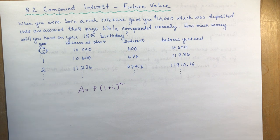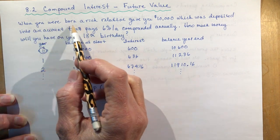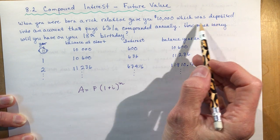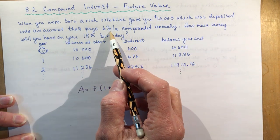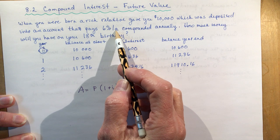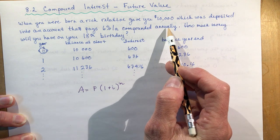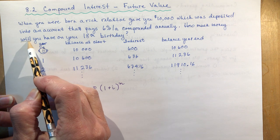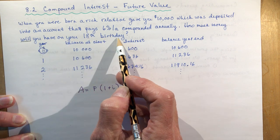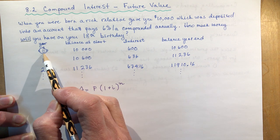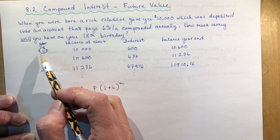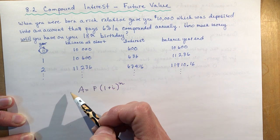The first one we're going to work on is a question where you inherit $10,000 from a rich relative, deposited into an account that paid 6% per annum compounded annually. How much money will you have — 'will you have', future tense — on your 18th birthday? So here's year zero, here's your little baby, and you put $10,000 in.